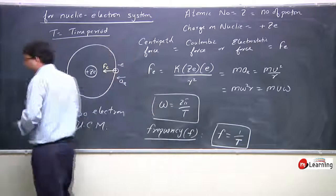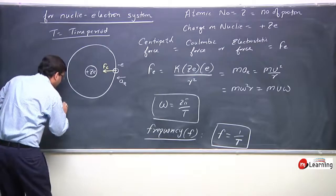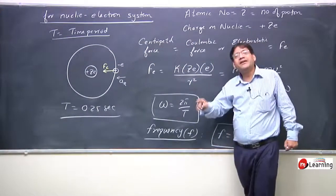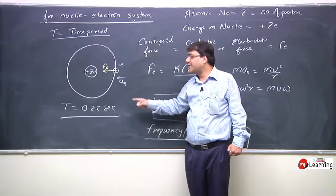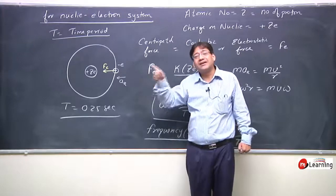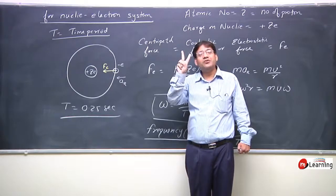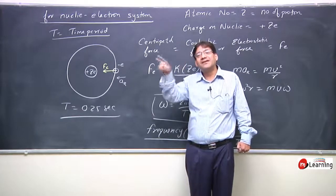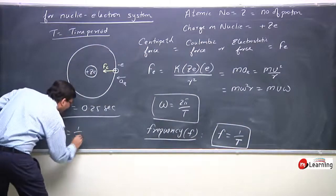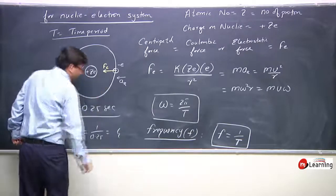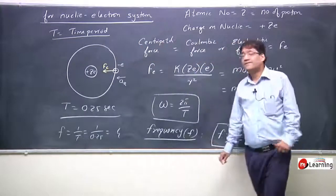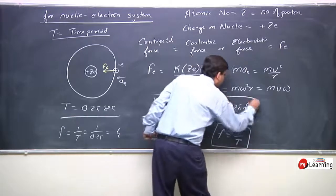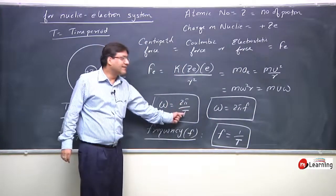For example, if the time period is 0.25 seconds — meaning one circular path is finished in 0.25 seconds — then in one second the particle would complete circular motion 4 times. So omega = 2π/T = 2πf.